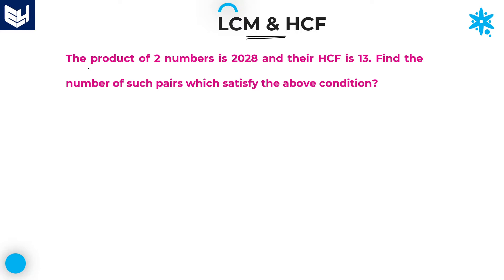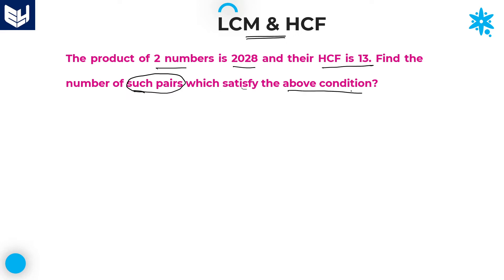Here, the question is given as: the product of two numbers is 2028 and their HCF is 13. The question is asking us to find the number of such pairs which satisfies these two conditions.